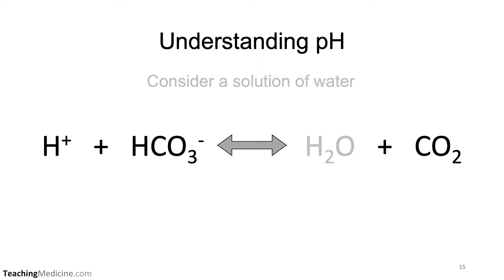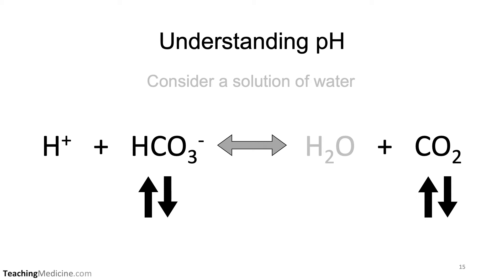In this solution of water, note that compound C has actually become water. It doesn't make any sense to dissolve water in water, so we are going to grey out H₂O and ignore it. The rest of this presentation is going to focus on what happens when we manipulate bicarb or we manipulate carbon dioxide levels, and as a result, what happens to the hydrogen ion concentration in the solution.